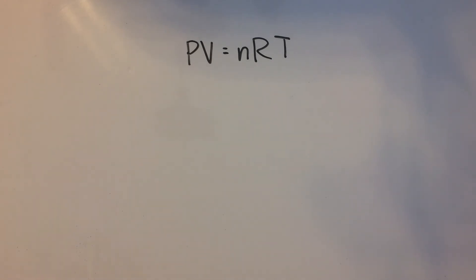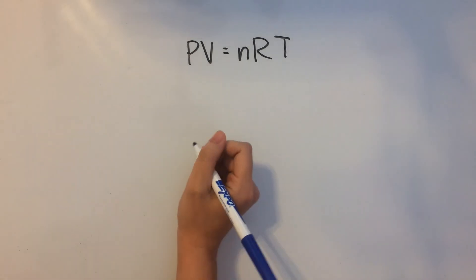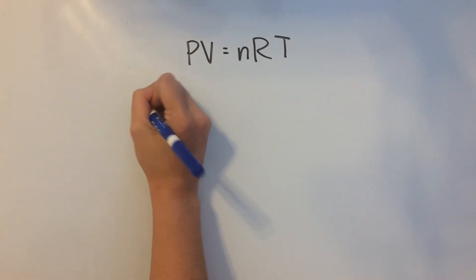So here's our ideal gas law, PV equals nRT. This is going to be one of the most important equations that you'll need for AP chemistry. So let's just define the variables before we jump into doing a practice problem.